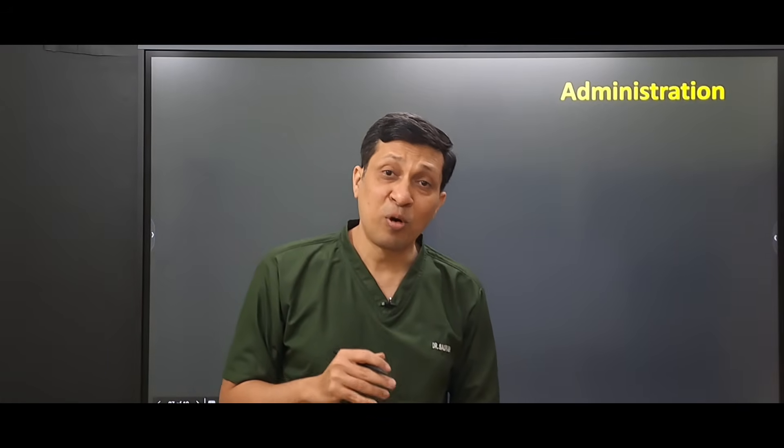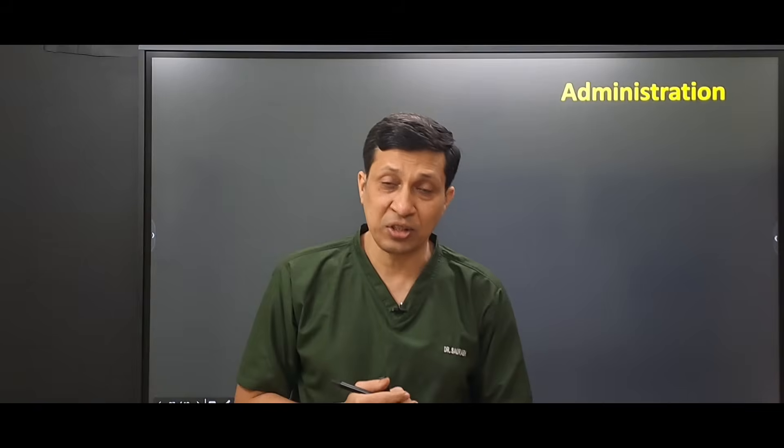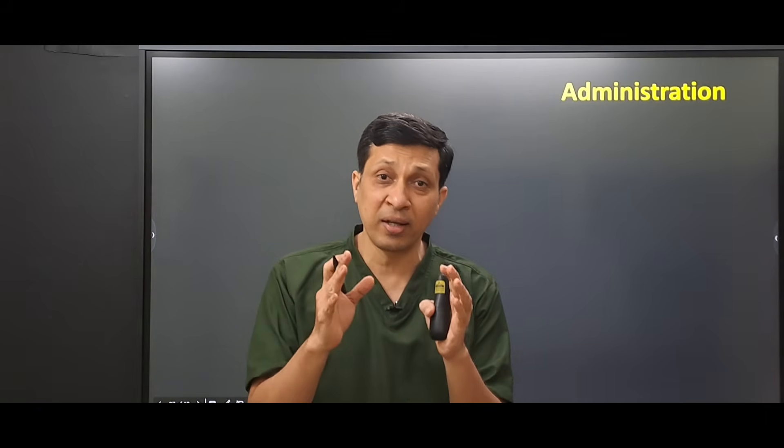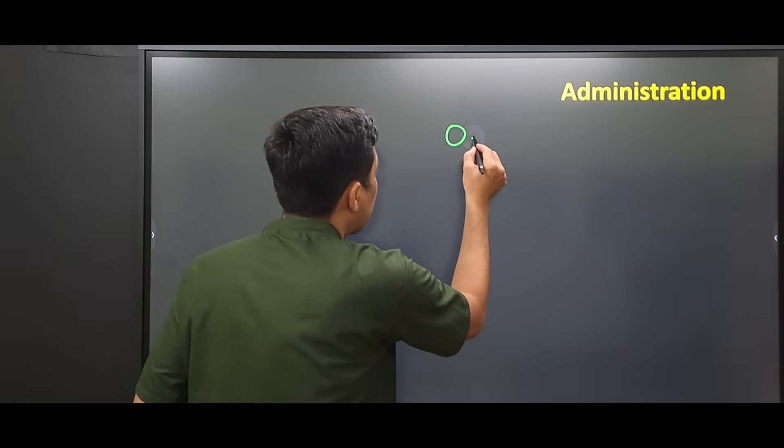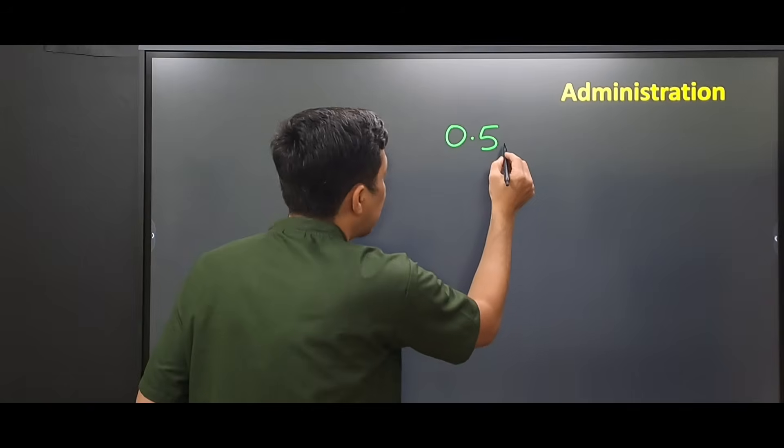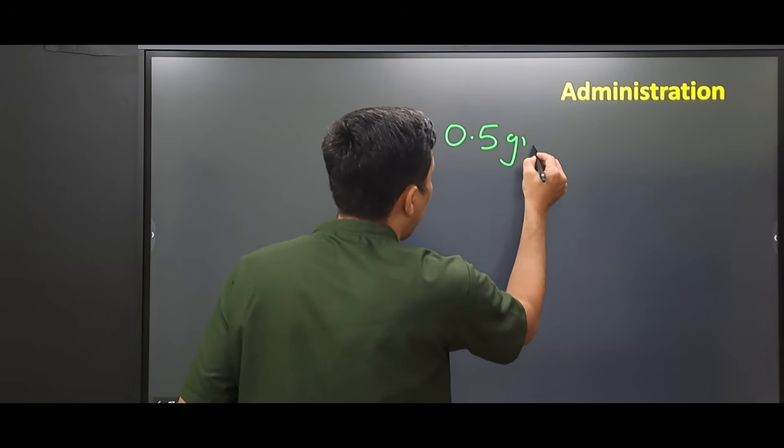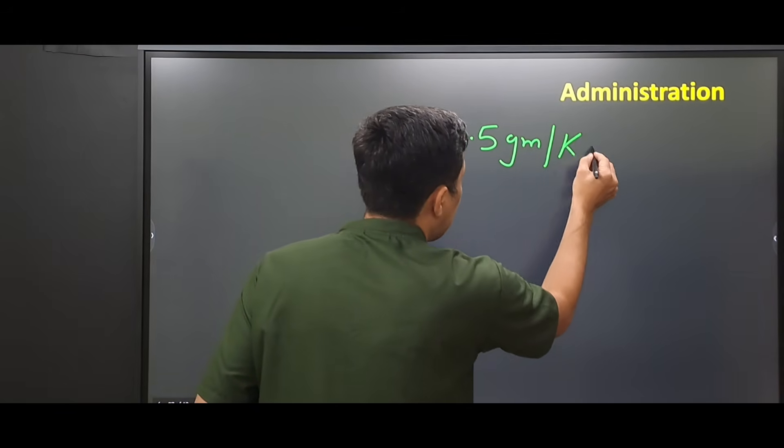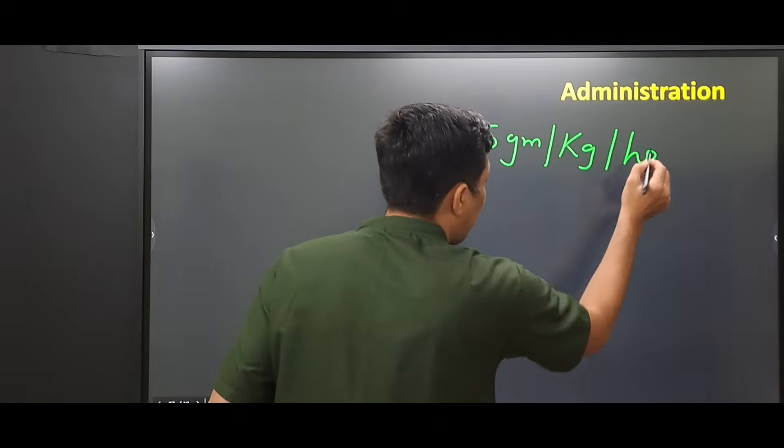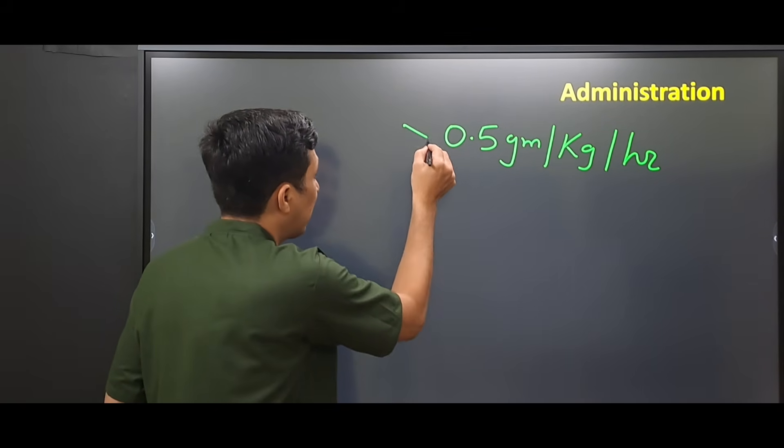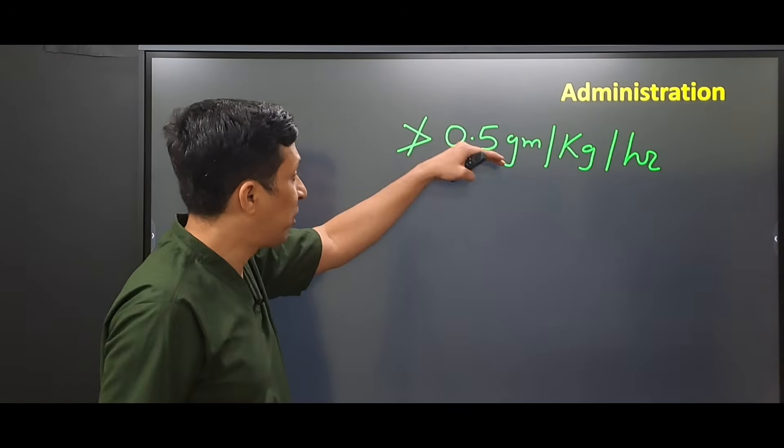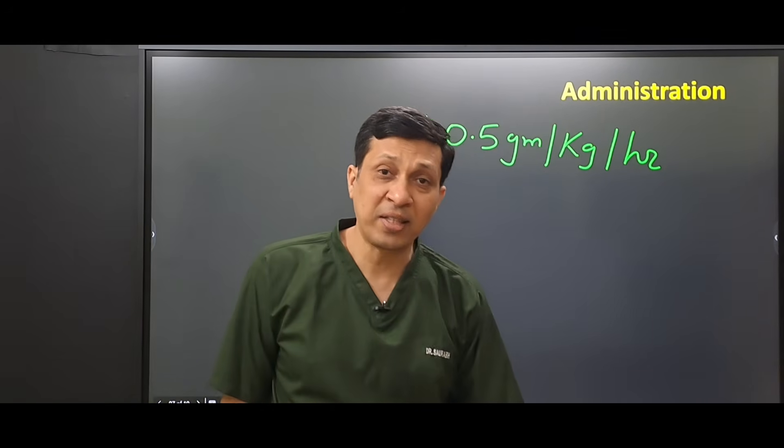And now the most important thing is about the administration. Whenever you are giving this fluid, you have to see that the rate of administration must not exceed 0.5 grams per kg per hour. When you are giving dextrose 5% to any patient, your rate of administration must never exceed 0.5 gram per kg per hour.